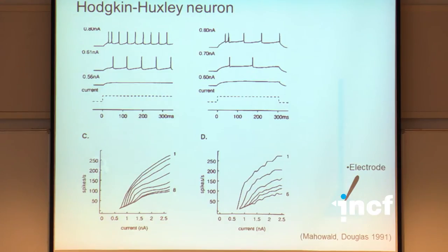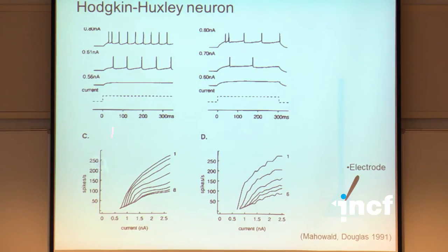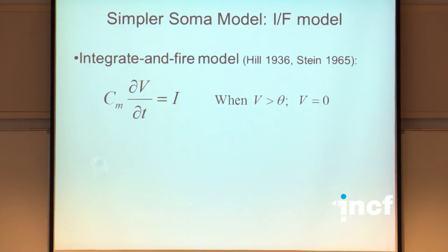You can get very similar firing outputs from silicon versus biological neurons. This circuit also shows adaptation: looking at interspike intervals, for different amounts of injected current you get more spikes as current increases. The second interspike interval gives a different F-I curve, and by the third the intervals are adapting — the time between spikes decreases over time. The Douglas-Mahowald silicon neuron could even imitate the adaptation seen in the Hodgkin-Huxley neuron.